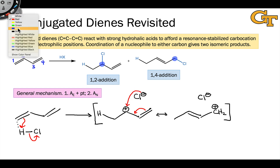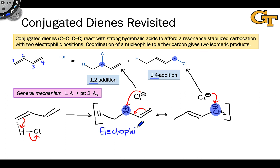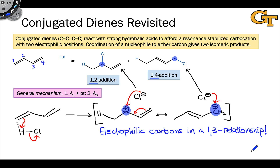This means that chloride can add to carbon 2, resulting in 1,2 addition, or chloride can add to carbon 4, resulting in 1,4 addition. At the end of the day, these two products are derived from an intermediate in which we find electrophilic carbons in a 1,3 relationship, separated by a single carbon spacer, and we find the same structural pattern in unsaturated carbonyl compounds.